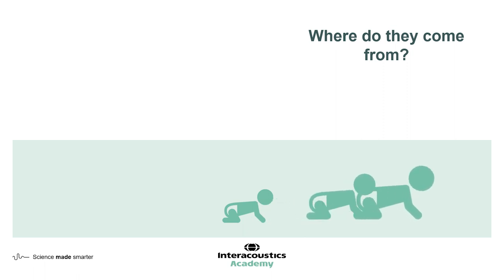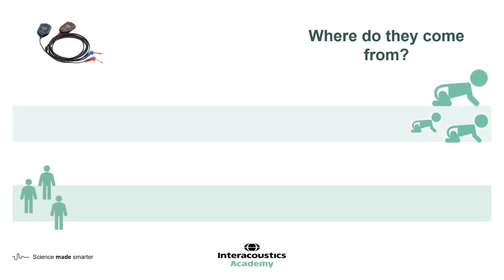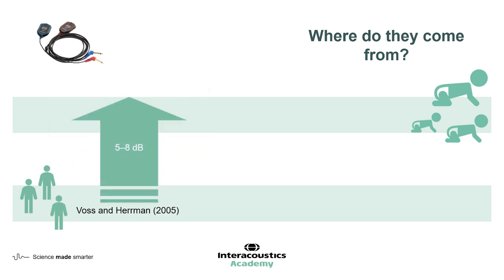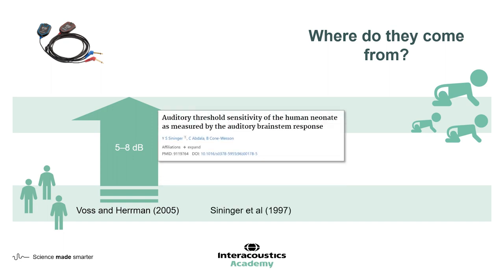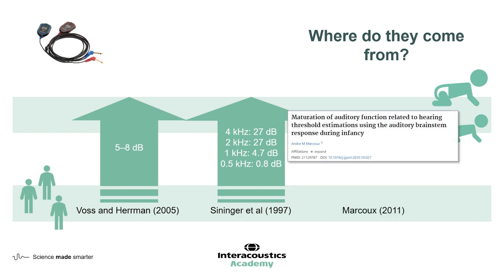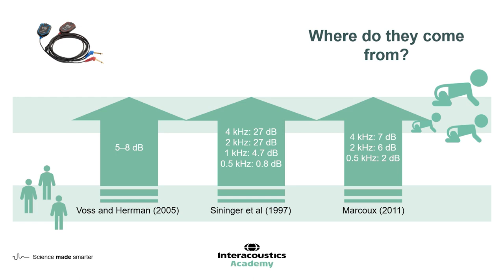So that's our ABR offset — but what about the different ages of our babies and the different transducers that we can use? Let's consider insert earphones. Insert earphones can give higher levels of sound in the smaller neonatal ear canal, and there have been some studies investigating this. Voss and Hermann in 2005 performed a modelling study and found an effect that varied by frequency of around 5 to 8 dB. Syninger et al. in 1997 measured sound in the ear canal and found a higher level in neonates than in adults for the four main frequencies, varying across those frequencies — clicks were 20 dB greater. Marcou in 2011 found values of 2, 6, and 7 dB at 0.5, 2, and 4 kHz for the difference between infant and adults by looking at the real ear-to-coupler differences in stimulus level.